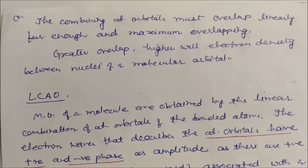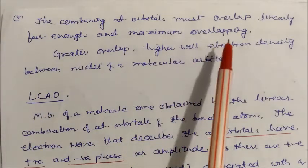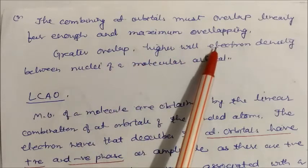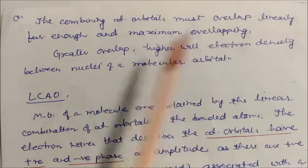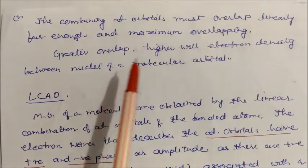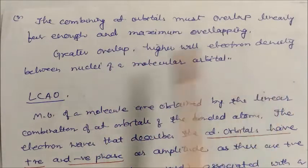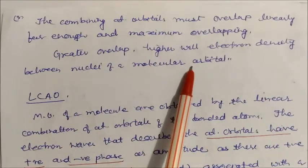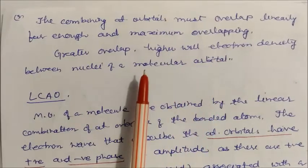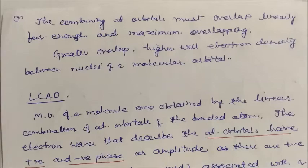The third condition is that the combining atomic orbitals must overlap linearly for sufficient and maximum overlapping. Their overlapping should be maximum and linear. Greater the overlapping, higher will be the electron density between the nuclei of the molecular orbital. Keep these three conditions in mind while forming molecular orbitals.